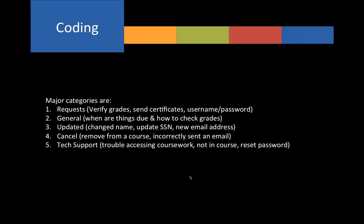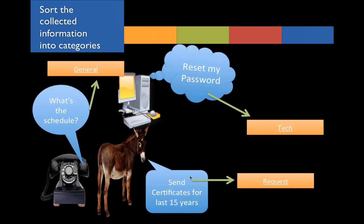Here are our major categories. We had a lot of requests: people wanting to know whether they passed a course, verifying their grades, sending a certificate, having their username or password reset. We had general requests for information — things you could look up on a syllabus, like how to check grades. We also had update requests, such as someone who registered for a course and then decided not to take it, so we'd remove them from the email list. And we had tech support requests that required somebody from a different department to address.